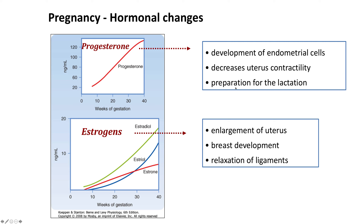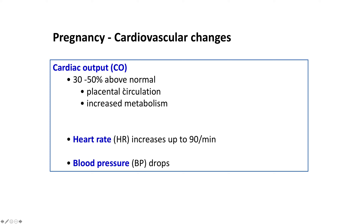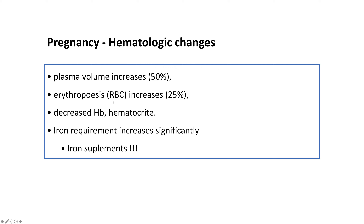Progesterone causes development of endometrial cells, decreases uterine contractility, and prepares the breasts for lactation. Estrogen causes enlargement of the uterus, aids breast development, and helps relax ligaments. During pregnancy, cardiac output increases 30 to 50 percent above normal to account for increased metabolism and blood circulation to the placenta. Heart rate increases to about 90 beats per minute, while blood pressure decreases.